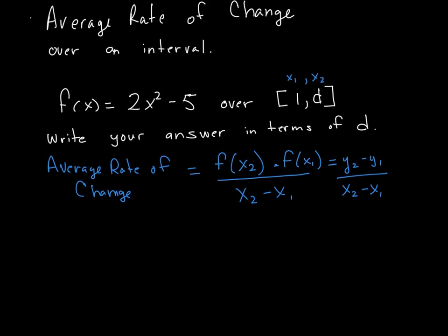The first thing I'm going to do is take 1 and plug it in. That is going to give me f of x1, which is the same thing as f of 1, which is 2 times 1 squared minus 5, or 2 minus 5, which is equal to negative 3.